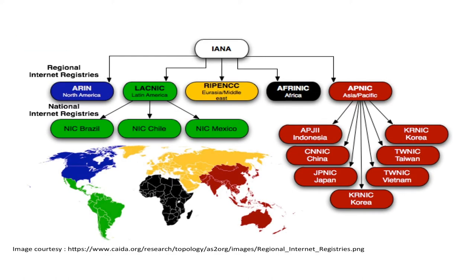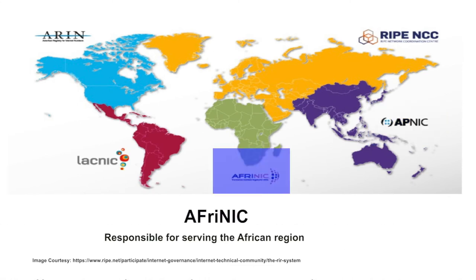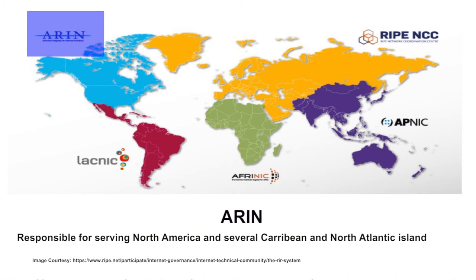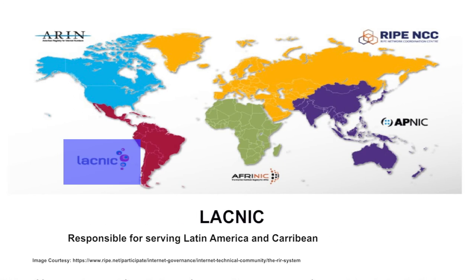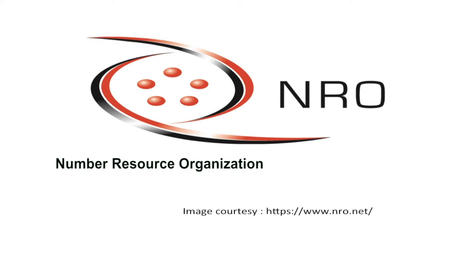IANA decentralizes the task of assigning IP addresses by allocating large chunks of IP addresses to five Regional Internet Registries, which are further responsible to allocate IP addresses in their zone. These RIRs are APNIC, AFRINIC, ARIN, LACNIC, and RIPE NCC. APNIC is responsible for serving the Asia Pacific region. AFRINIC is responsible for serving the African region. ARIN is responsible for serving North America and several Caribbean and North Atlantic islands. LACNIC is responsible for serving Latin America and the Caribbean. RIPE NCC is responsible for serving Europe, Middle East, and parts of Central Asia. For licensing and coordination between these five RIRs, there is an organization called the Number Resource Organization or NRO.